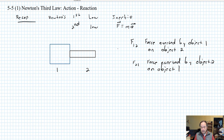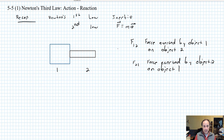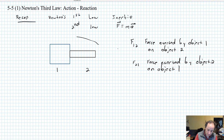To recap: Newton's first law is the law of inertia — an object that has no net force acting on it is going to travel in a straight line at constant velocity. If an unbalanced force acts on it, it's going to undergo an acceleration — that's the second law. The third law is that when two objects interact, the force exerted by one on the second is the same magnitude as the force exerted by the second on the first, as we see in this diagram.